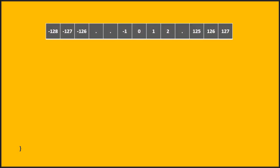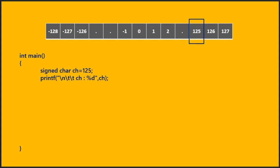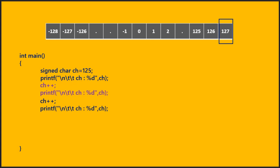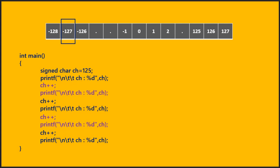Looking at the graphical representation: starting at 125, incrementing gives 126, then 127 — all within range. Incrementing once more exceeds the range by 1 and displays -128. Incrementing again displays -127. So for both signed and unsigned characters, when we exceed the maximum limit, values wrap around and start from the lowest range again.